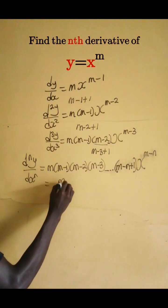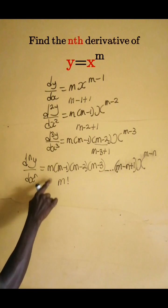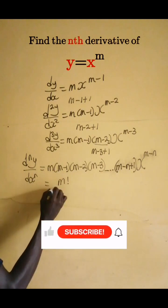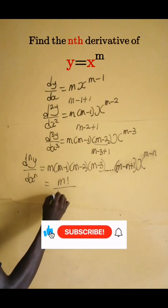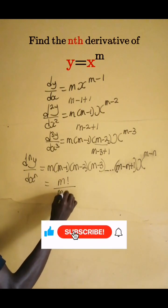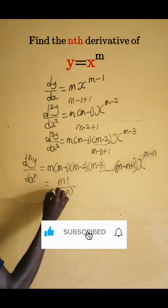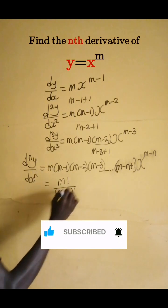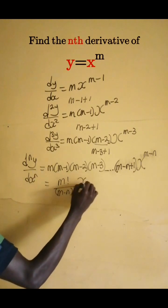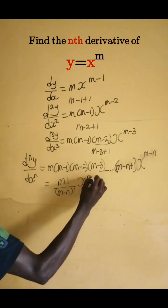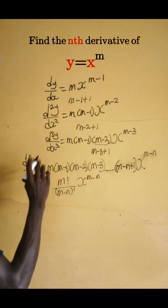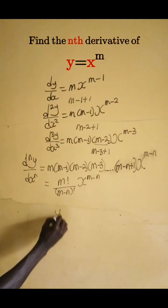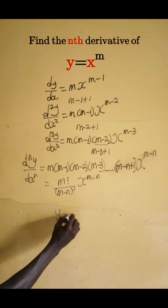Let's see how we can rewrite this as m factorial. That is m factorial divided by (m minus n) factorial times x to the power m minus n, as the nth derivative.